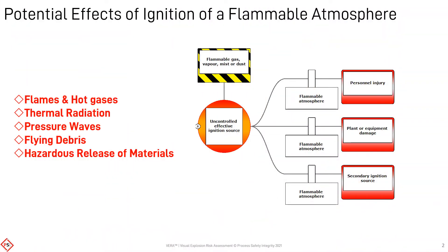This simple representation summarizes the major receptors that could be impacted by an uncontrolled ignition of a flammable atmosphere. A fire or explosion may occur when a credible, competent, or effective ignition source coincides with a flammable substance, e.g. gas, vapor, mist, or dust mixed with air.